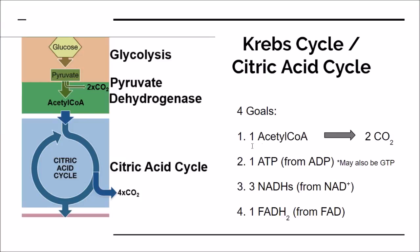Another important output is that you're going to be making one ATP from ADP per acetyl-CoA. So each acetyl-CoA going through the Krebs cycle will end up making one single ATP molecule. It may also be GTP — you might see this shown as either ATP or GTP being made. GTP is essentially an ATP equivalent, so it doesn't really matter much for the scope of an intro course.